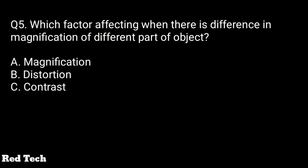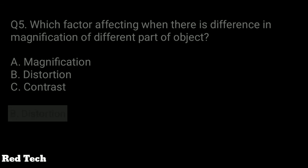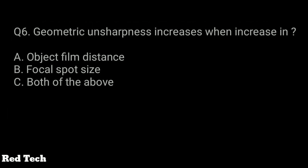Question number five: what factor is affected when there is a difference in magnification of different parts of an object? The options are magnification, distortion, or contrast. The right answer is distortion.